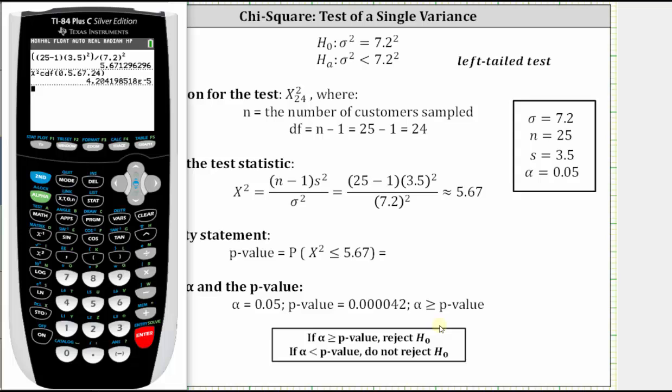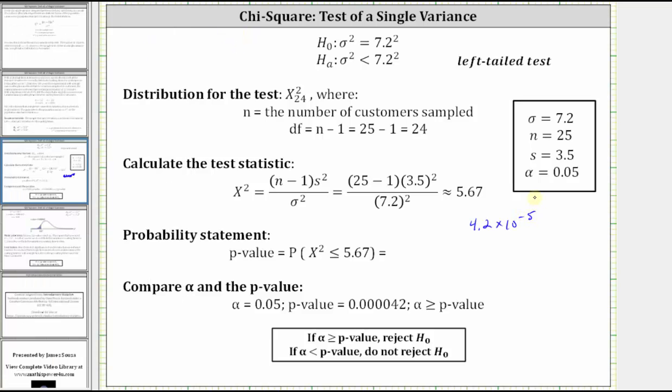Notice how we have e negative 5 here on the right, which indicates scientific notation. The p-value is approximately 4.2 times 10 to the power of negative 5. Let's go ahead and write that down. If we want to convert this to decimal notation, we need to move the decimal five places to the left, which would give us 0.000042, which we can see matches the p-value shown below.